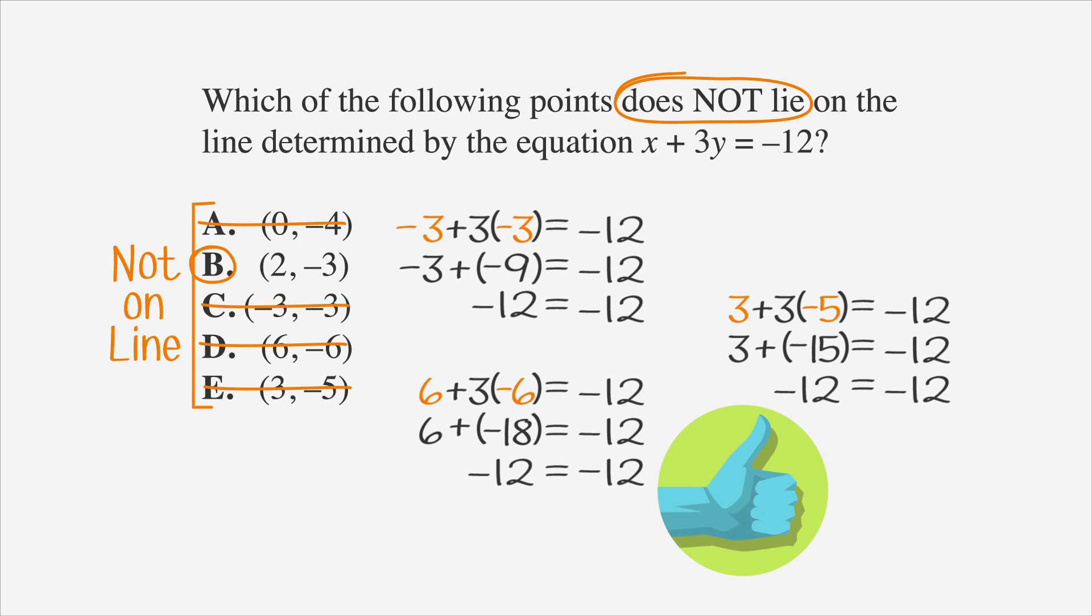So, answer choice B it is. Nice work. So, there you have it. By applying the slope-intercept formula, you can find the slope and y-intercept of a line, and you can identify a line based on that knowledge. See? I told you this formula would come in handy.